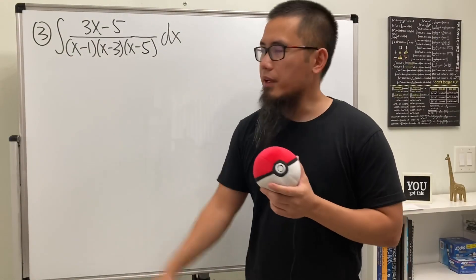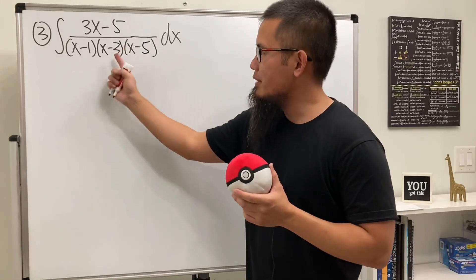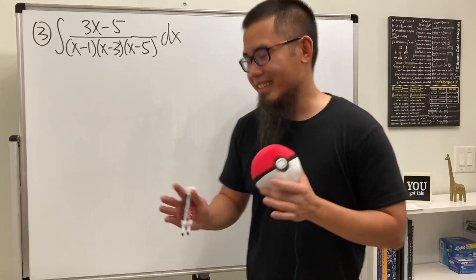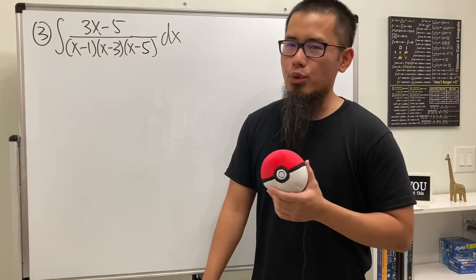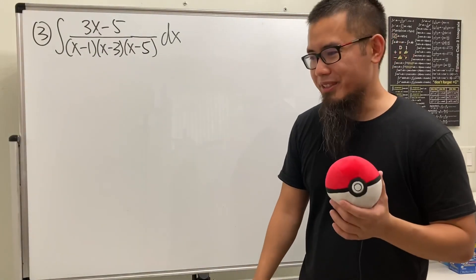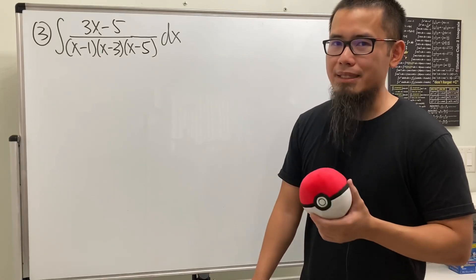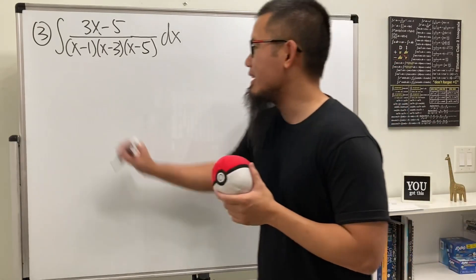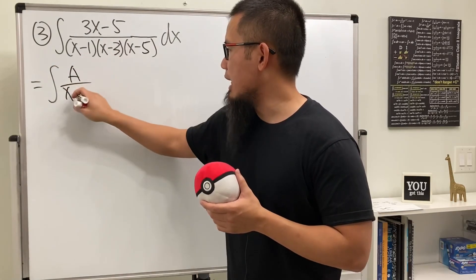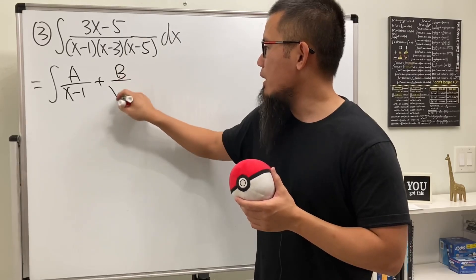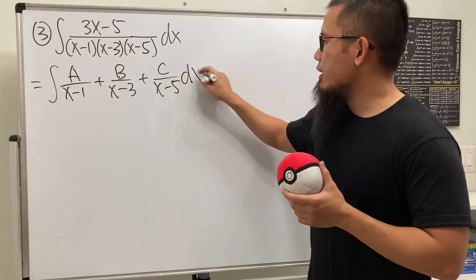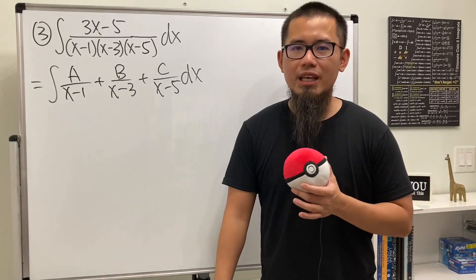For the third problem, we have the integral of (3x minus 5) over three distinct linear factors on the bottom. The good news is we can do exactly what we did earlier, but we set up three smaller fractions: A over the first denominator, B over the second, and C over the third. We can still use the cover-up method to find A, B, and C.